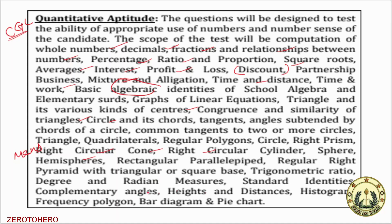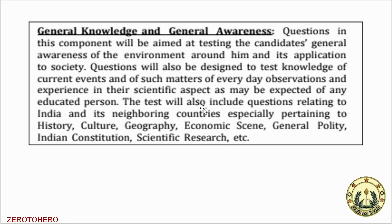There are angles, heights, and distances. Charts and data interpretation are included, with around 5 charts. Next is General Knowledge. General Knowledge covers history, culture, economics, geography, and constitution. Students are expected to know science topics as well. This tests general awareness and overall knowledge.